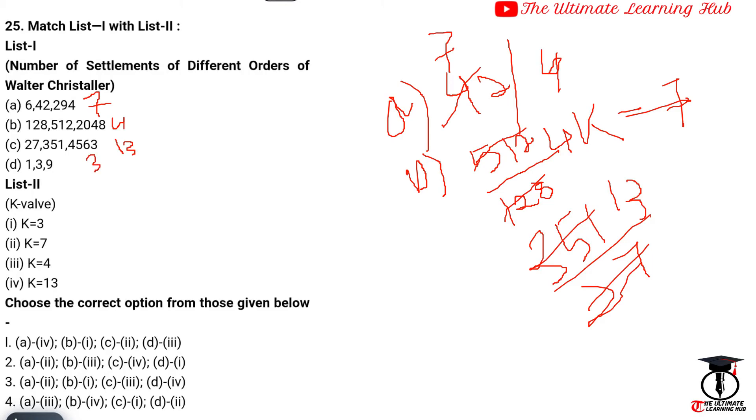Now I just match it. A is K7, means A is option 2. In this option A is 2.